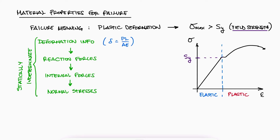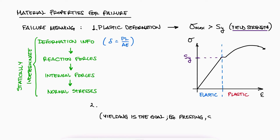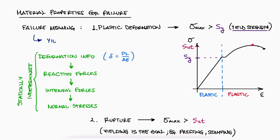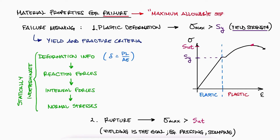In other applications, yielding might even be a desired goal — like in some manufacturing steps — and therefore failure in those cases might be defined by the ultimate strength instead of the yield strength. Regardless of what failure means, we will define a maximum allowable stress as the value that the stresses can take within a member or structure without causing it to fail.